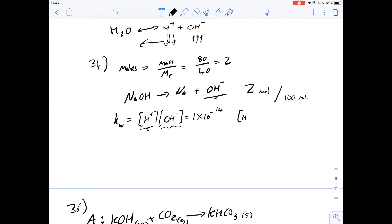The concentration of the protons is going to be 1 times 10 to the minus 14 divided by the concentration of hydroxide ions. The concentration is the number of moles over the volume, so that's 2 moles over 0.1 liter. 100 milliliters is 0.1 liters. That gives us an answer of 5 times 10 to the minus 16.